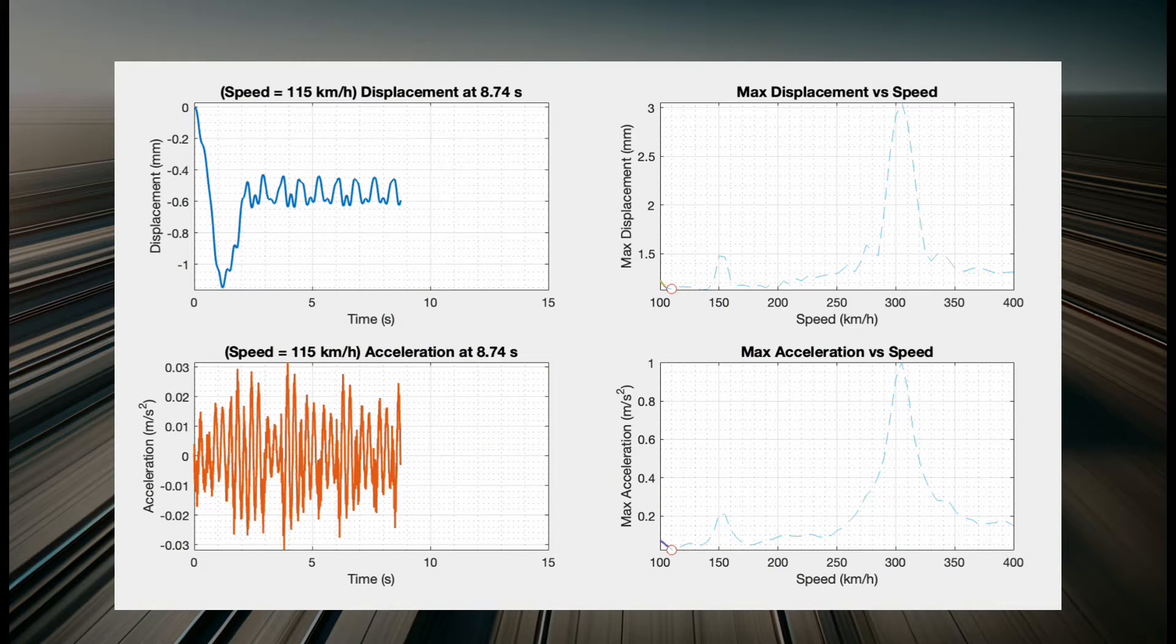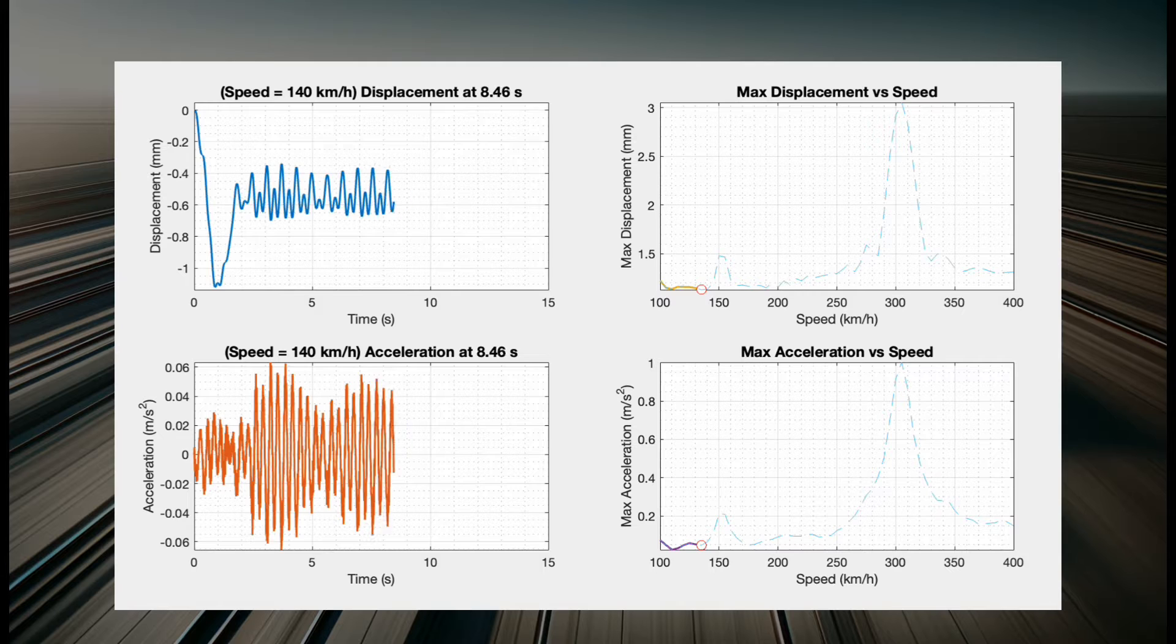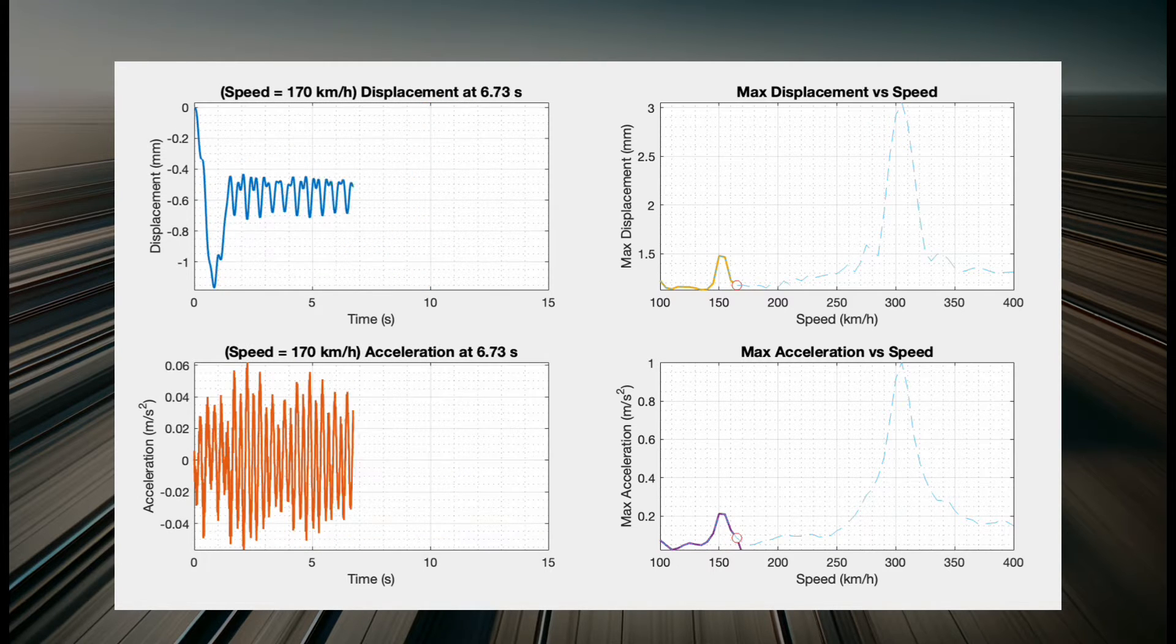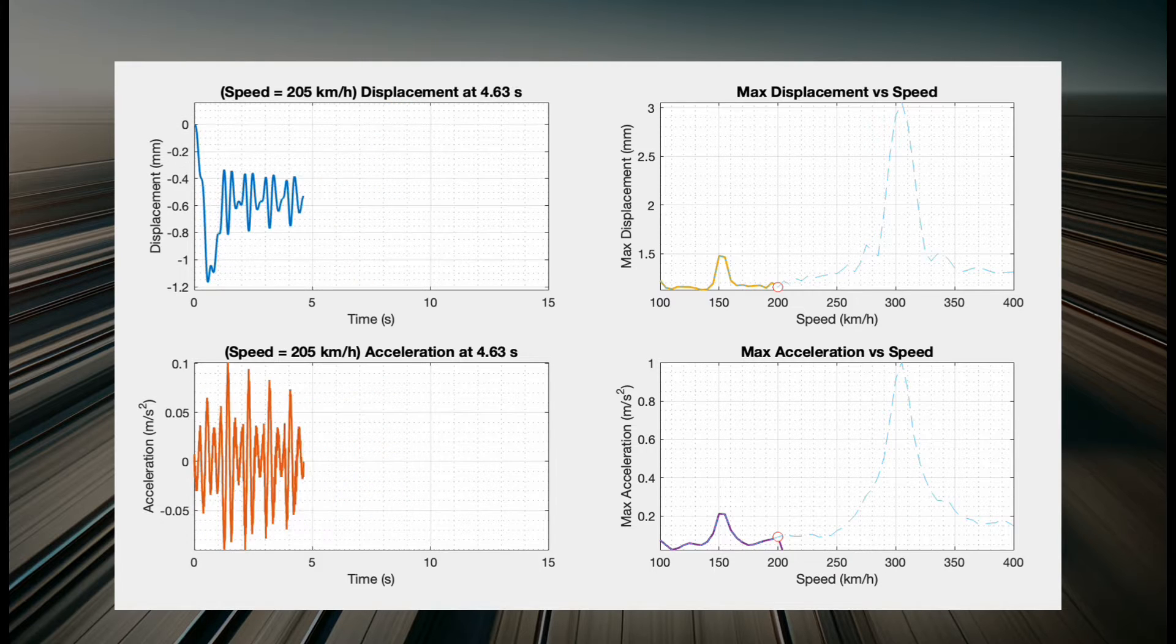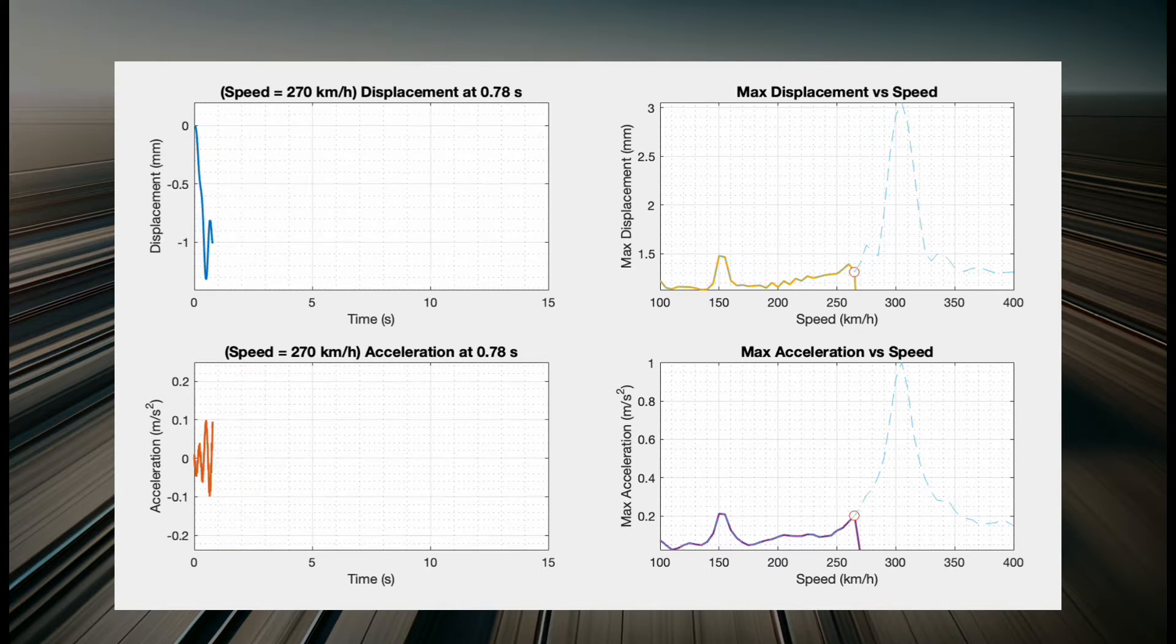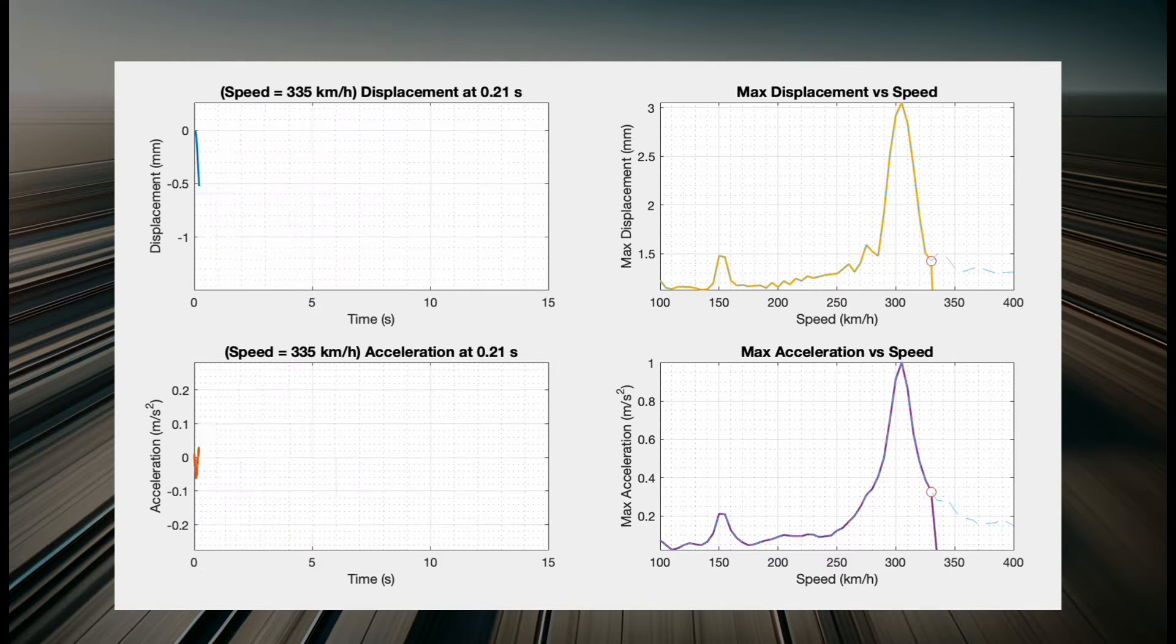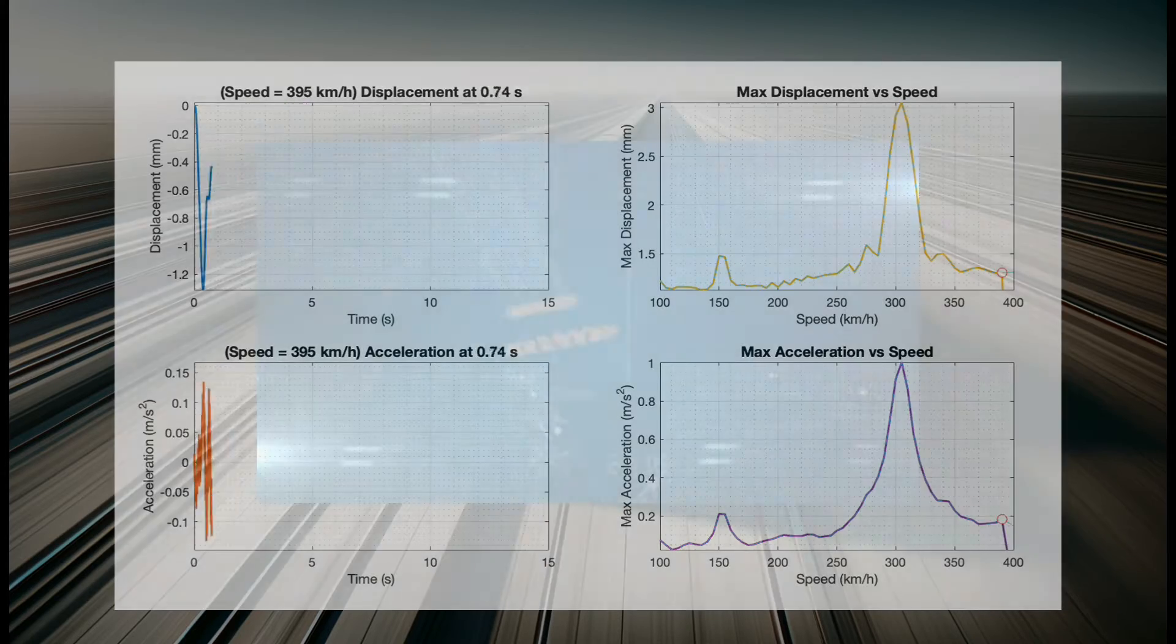The dynamic response of a bridge varies with train velocity. By charting the peak displacement and acceleration for varying speeds, this curve illustrates a bridge's maximum vertical movement and acceleration in response to a specific train model. The video showcases the construction of these envelope curves for the Antoing bridge under the HSLM A8 train model. We observe that the bridge's greatest displacement and acceleration occur when the train reaches approximately 302 km per hour.